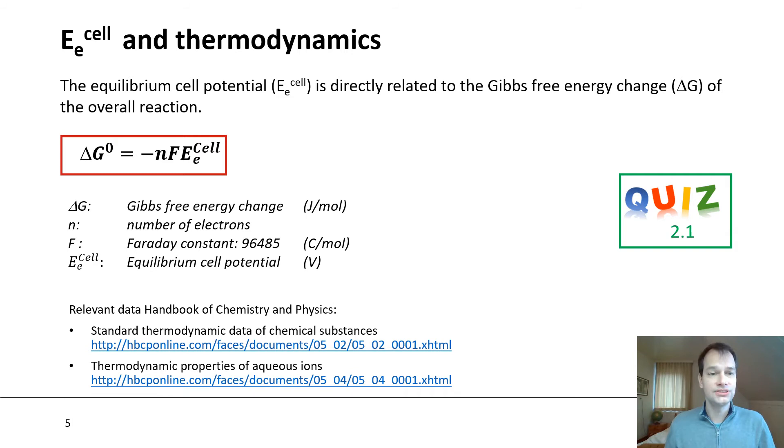Now, how does the equilibrium cell potential relate to thermodynamic data? I assume you all have had courses on thermodynamics, and hence you should be familiar with concepts such as Gibbs energy, enthalpy, and entropy. You should also be familiar with the sources where you can find relevant data such as the Handbook of Chemistry and Physics, of which I have included a link here. Based on these data, you take a particular reaction and you can calculate what the Gibbs free energy is of such a reaction.